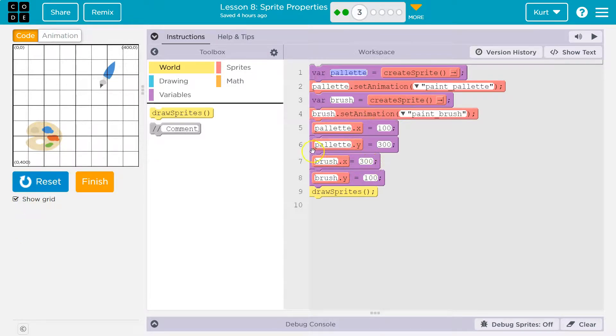Then the paintbrush right now is 300, 100. Yep, it is. So that's flip-flopped. If they want the paintbrush on the palette, we need it to have the same x and y. So let's go ahead and change up this paintbrush to have the same x and y.